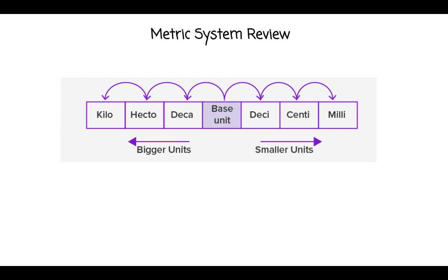Metric system review: we're going to focus mainly on kilo, the base unit gram, centigrams, and milligrams. We won't focus much on hecto, deco, and deci. Remember, kilo is going to be bigger than a gram, and centigram and milligram are going to be smaller than our base unit, gram.